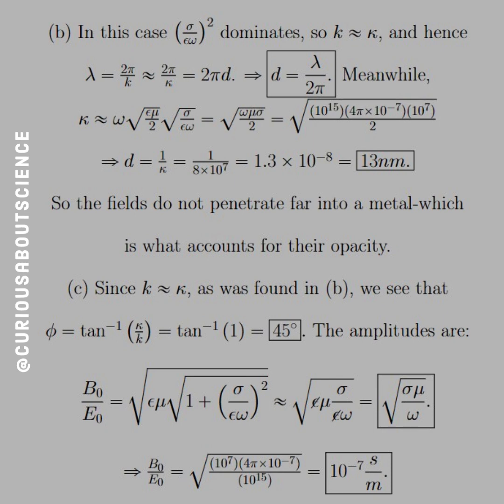And the amplitudes are B naught over E naught, take their ratio, you see there, and then you get square root epsilon mu, square root 1 plus sigma over epsilon omega squared. Again, that approximately pushes through, so you just get square root of sigma over epsilon omega squared,